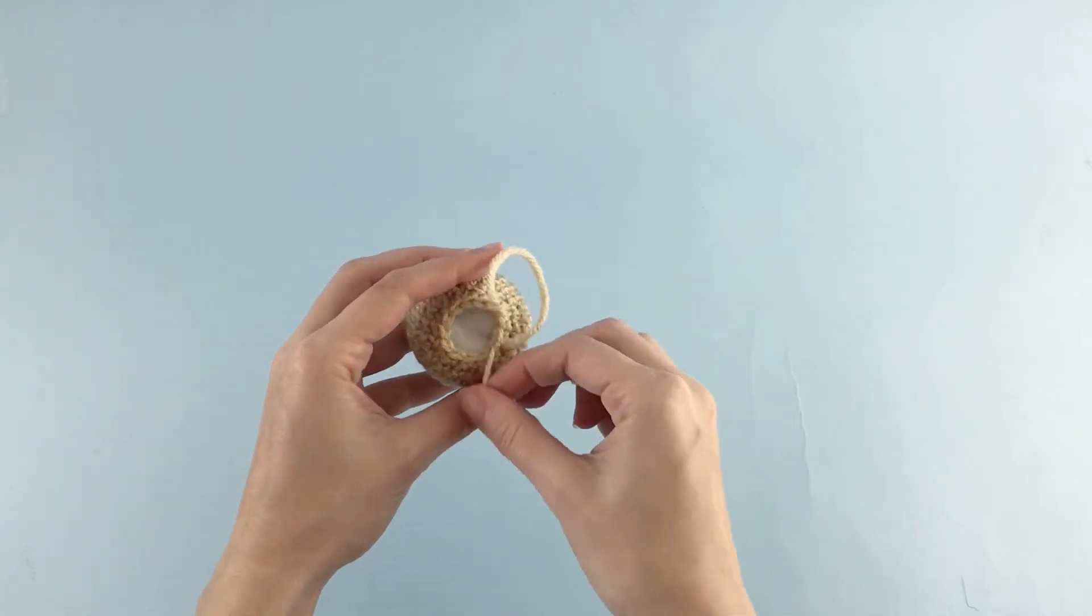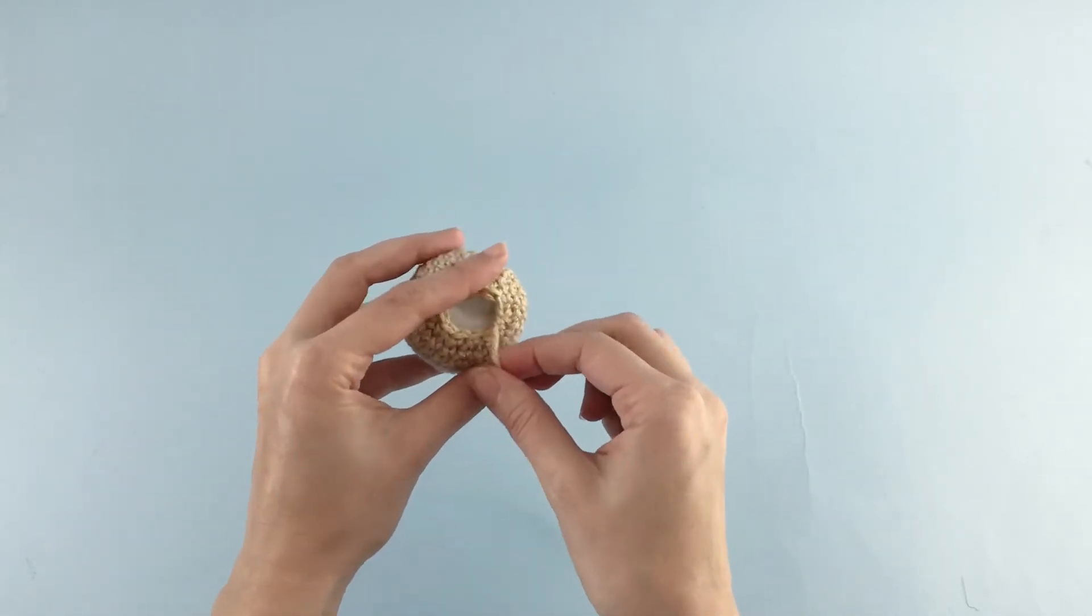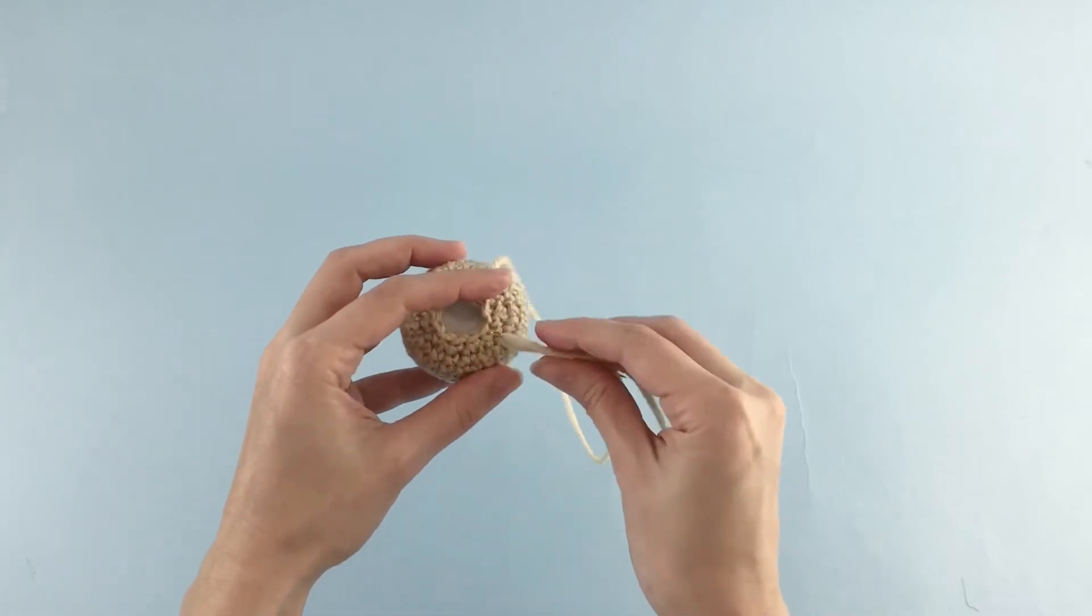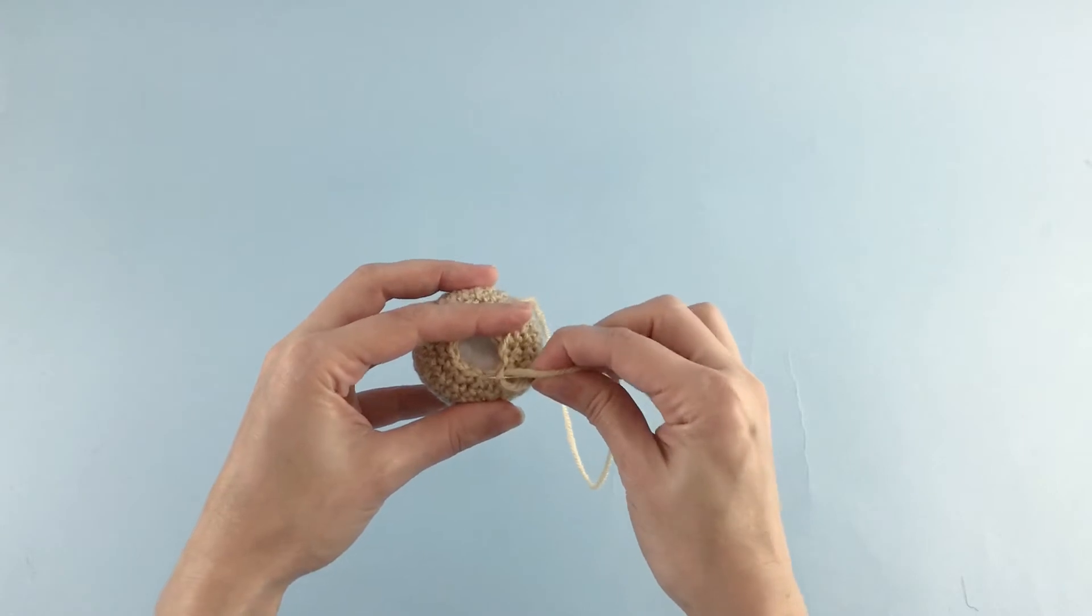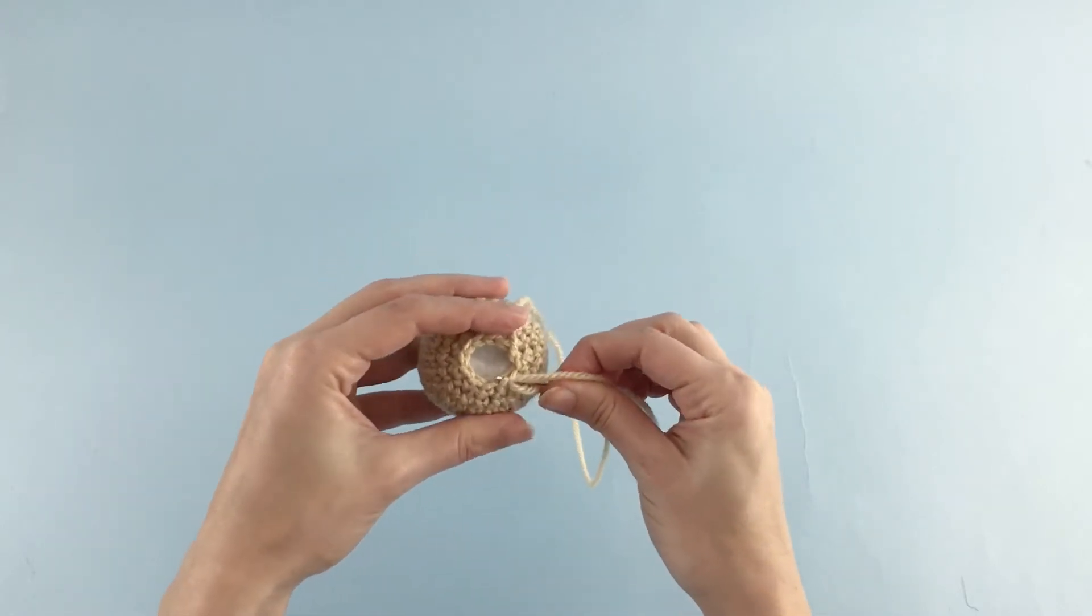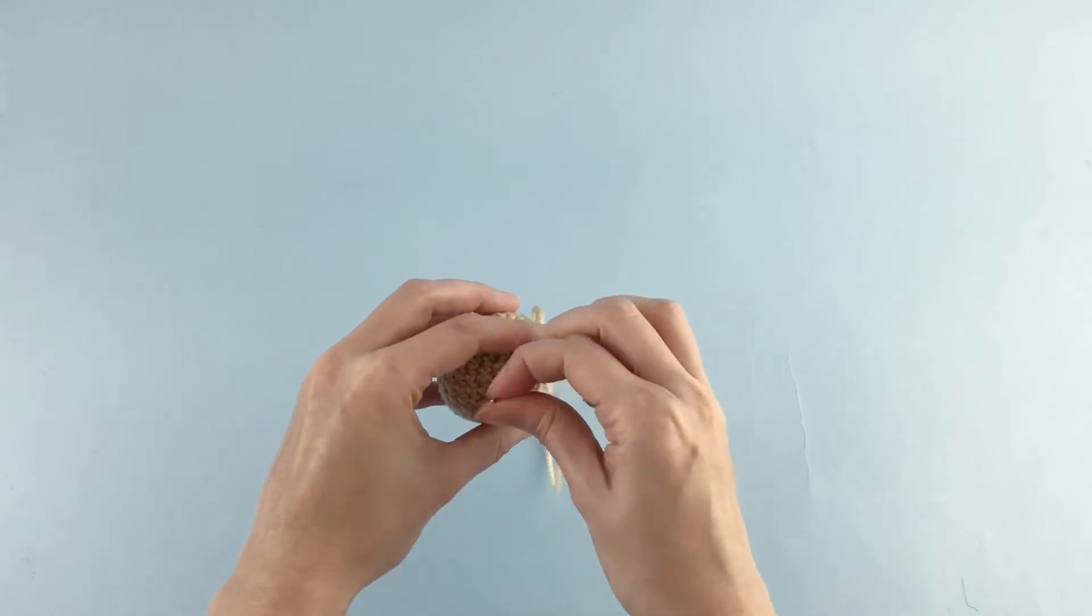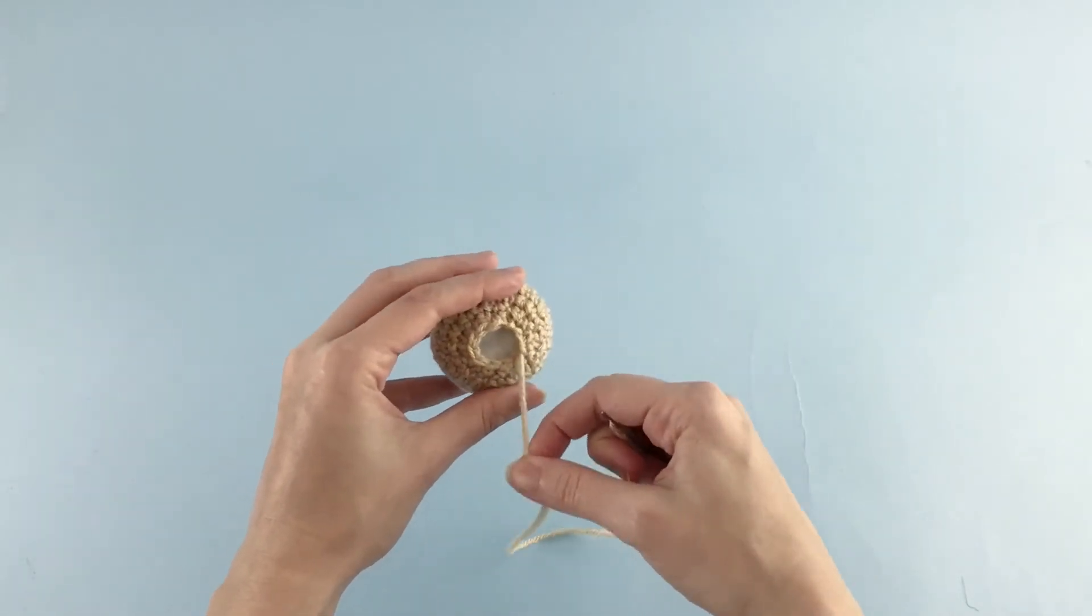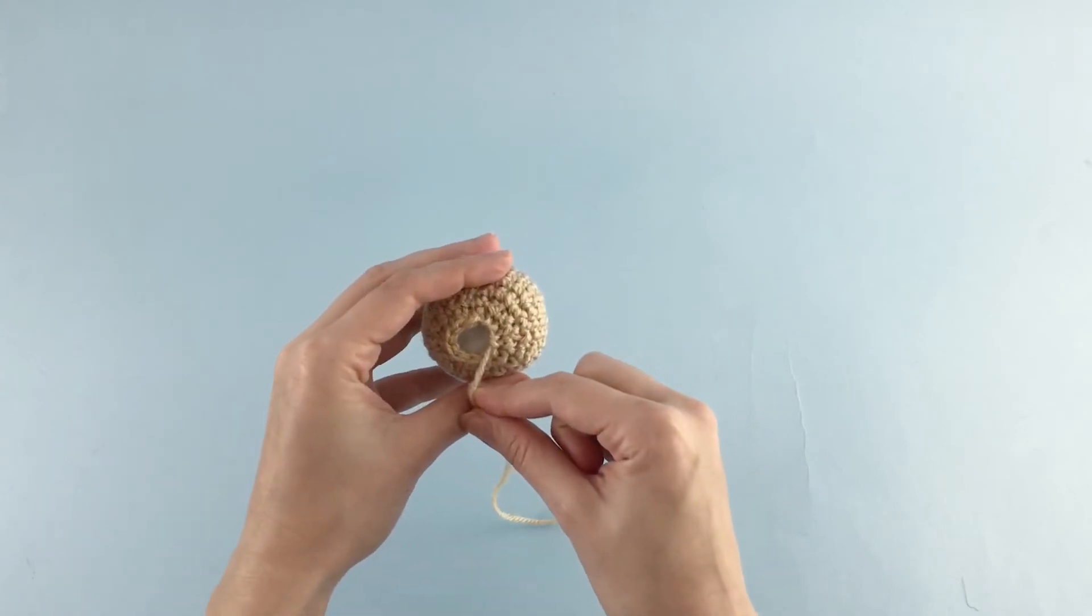Pull the yarn and again you're going to take only the front loop of the stitch. If you don't know what is the front loop and the back loop, check the link below in the description. There is a blog post with all the information that you need to know.